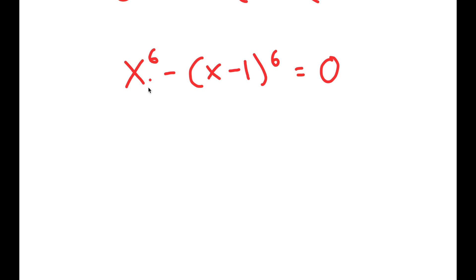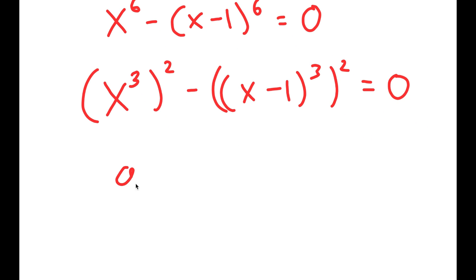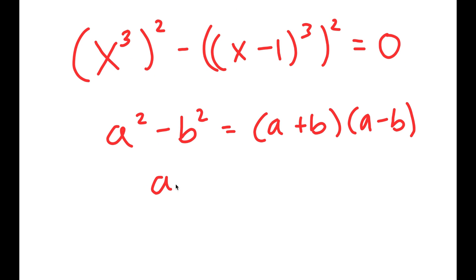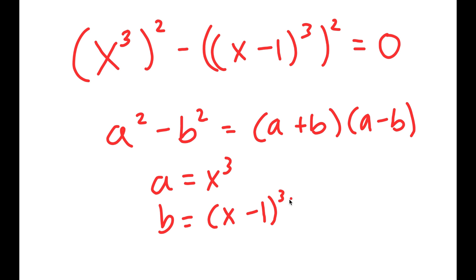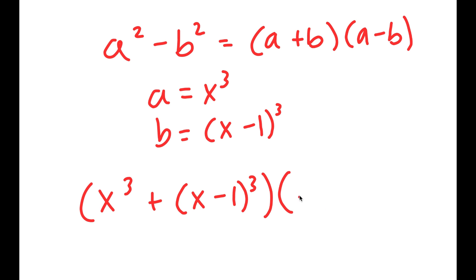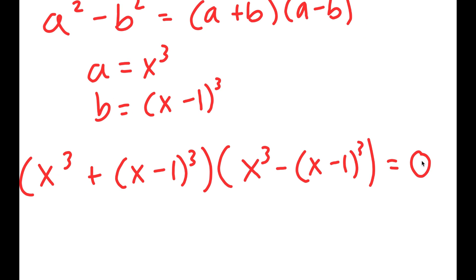Now, from here, I'm going to rewrite this as x to the power of 3, squared, minus x minus 1 to the power of 3, squared, equals 0. And if I have something in the form a squared minus b squared, this is equal to a plus b times a minus b. So in this case, a is x to the power of 3 and b is x minus 1 to the power of 3. So I get x³ plus (x-1)³ times x³ minus (x-1)³ is equal to 0.